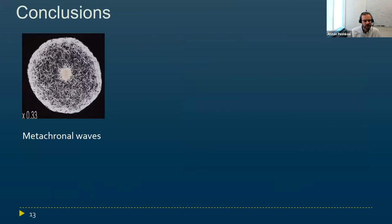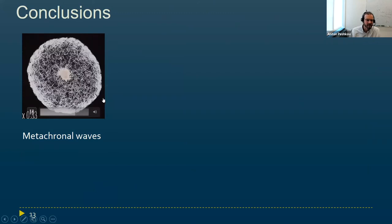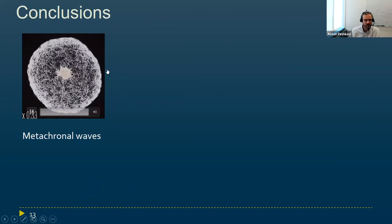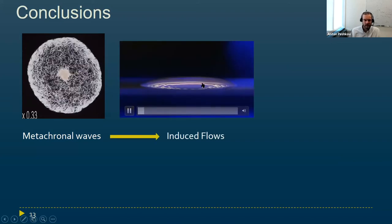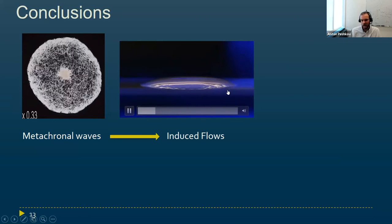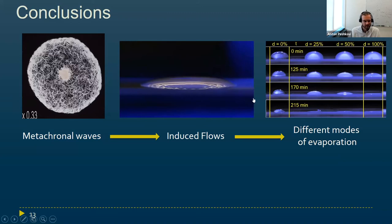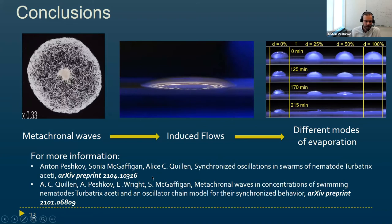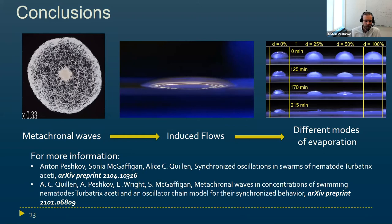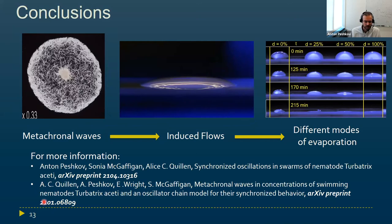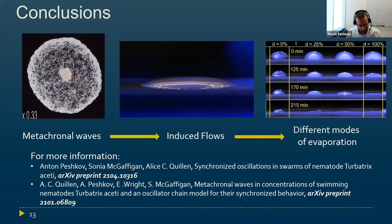In conclusion, the nematode Turbatrix aceti is a new kind of active matter — swarmalator particles that not only self-propel but also oscillate and can synchronize both their motion and their oscillation. They produce a very nice metachronal wave that generates fluid flows capable of changing the shape of the droplet surface. The force produced by the nematodes and the fluid flows are actually capable of changing the physics of evaporation of the droplet. Most of what I presented today is in this preprint, and we also have a simple model for the synchronization of these nematodes in another article. Thank you.